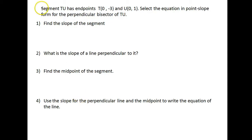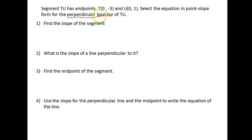In this question we're asked, with segment TU that has endpoints at (0, -3) and (0, 1), select the equation in point-slope form for the perpendicular bisector. I'm just going to show you how you would find that answer. We want the perpendicular bisector, so we need a line that is both perpendicular and goes straight through the middle of TU.